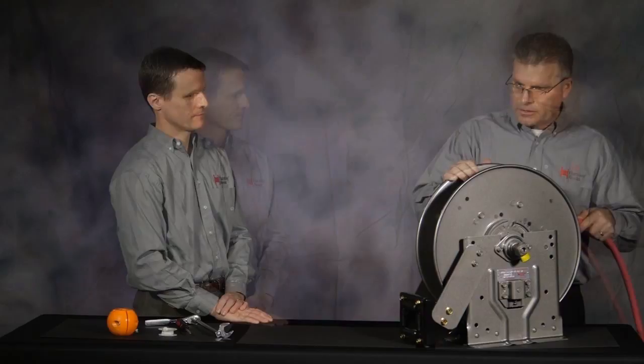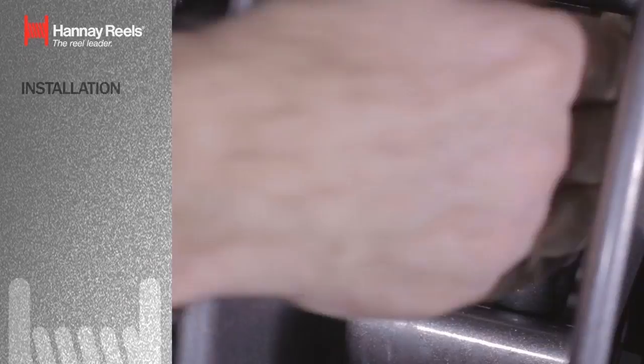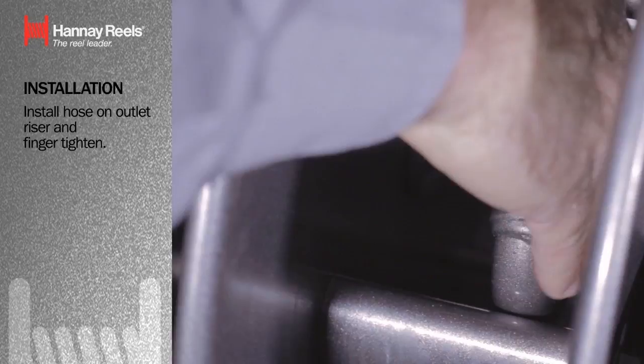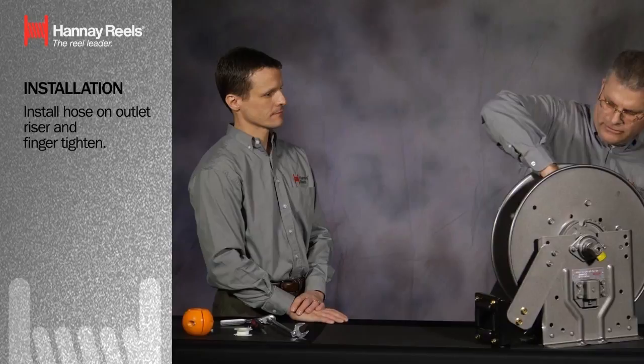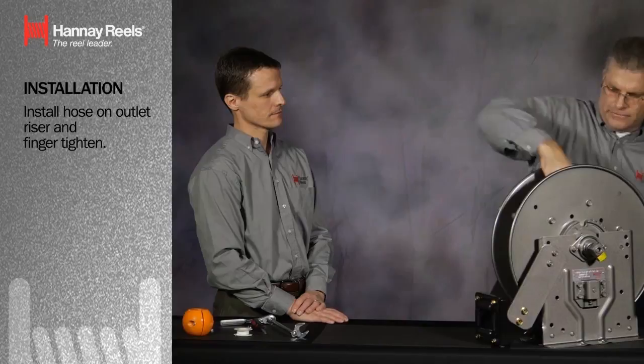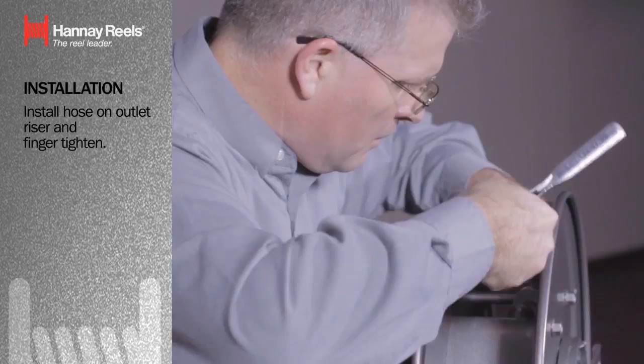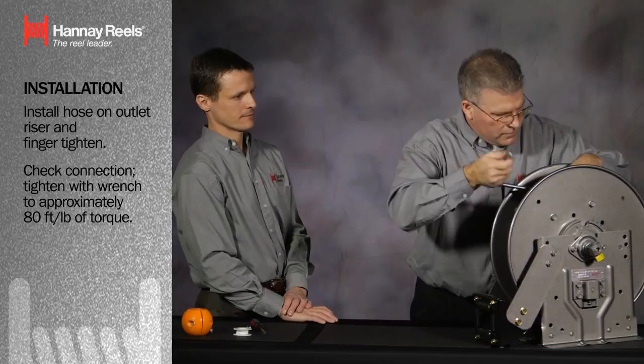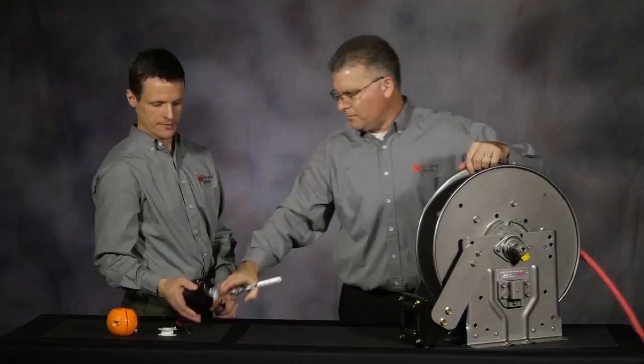This spring reel has no tension on it whatsoever at this time. We're going to install the hose on the outlet riser. I'm going to thread it in place, like so. I finger tighten it to get the thread started so we don't cross the threads. And I'm going to grab that crow's foot from you and tighten everything up. Tighten the threads down to approximately 80 foot-pounds. And we are set there at this time.